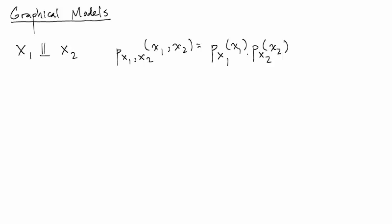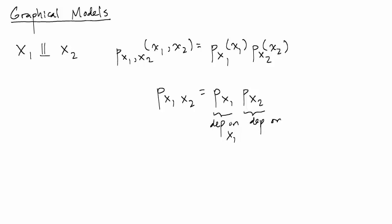Of course, when we write an equation like this, we mean that this holds for all little x1 and all little x2. Oftentimes, as a shorthand, we will just write p(x1, x2) equals p(x1) times p(x2), without writing the little x's. I'm going to introduce some notation: this thing I'm going to call phi1, and this thing I'm going to call phi2. So phi1 of x1 and phi2 of x2.